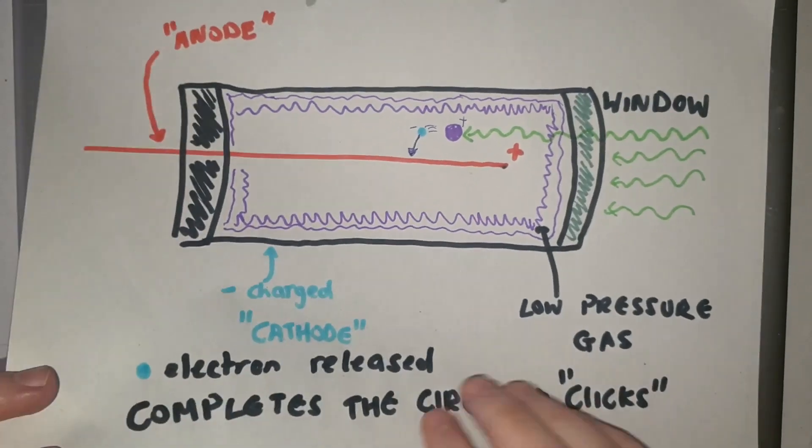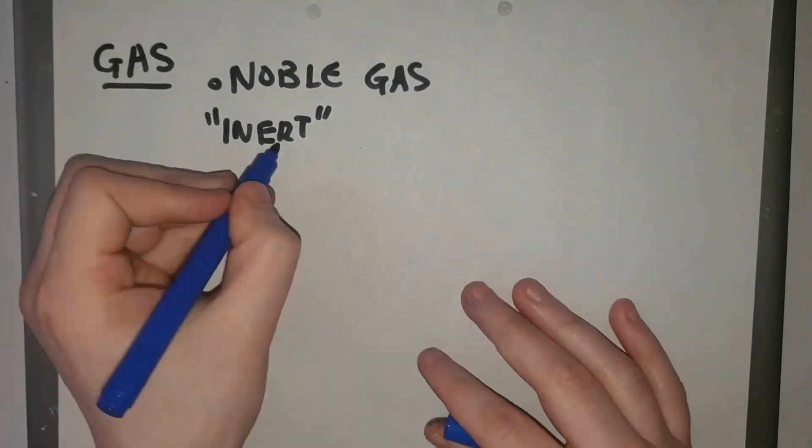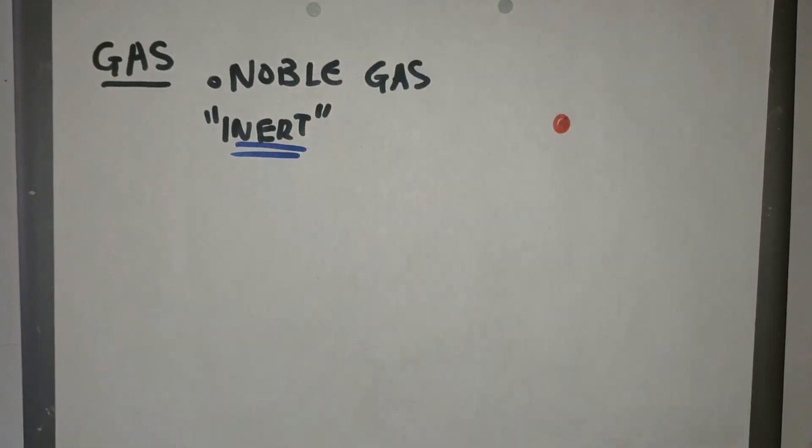Now as I said we need to fill the tube with a low pressure gas and we can't just put any gas into the Geiger-Müller tube. It has to be an unreactive gas. So we use noble gases or group zero gases such as argon.